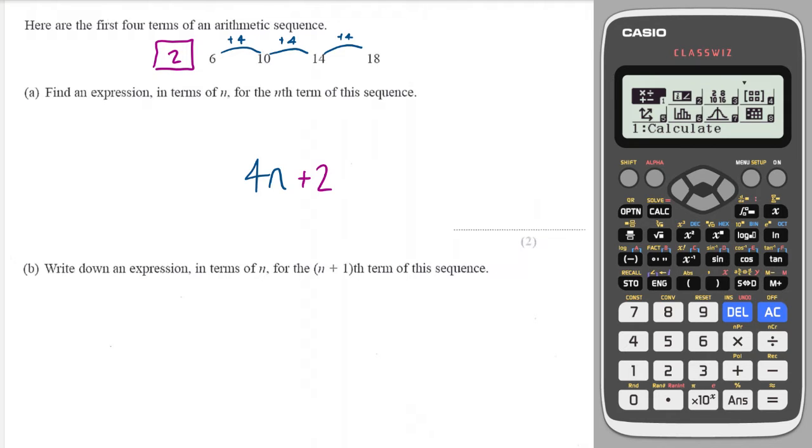Next question asks us to find an expression for the (n+1)th term. There's a bit of a strange question this one and it always comes up at the start of a paper. Essentially what you do is you just replace the n in the term that you've already created with (n+1).